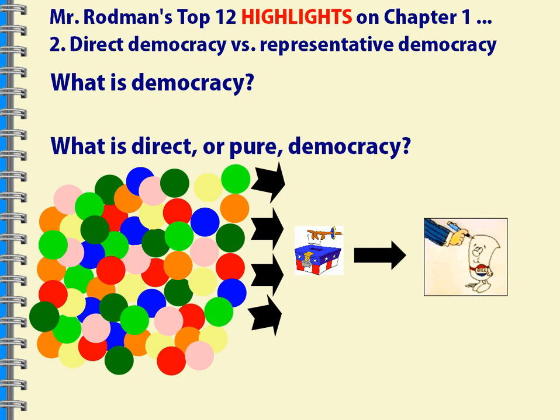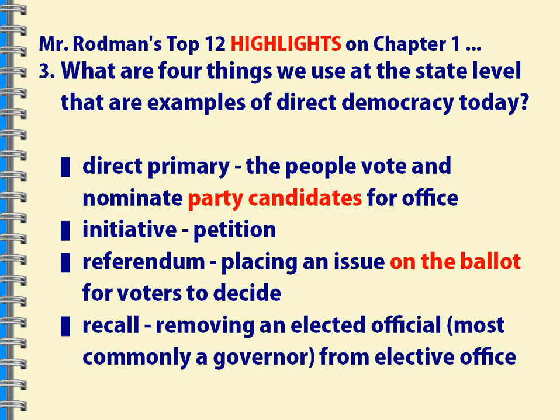Magleby talks about the idea that we consent to be governed — to have representatives that we elect as our leaders who will pass laws that we then have to follow. That's the idea of representative democracy. At the state level, we have some types of direct democracy that are in play.